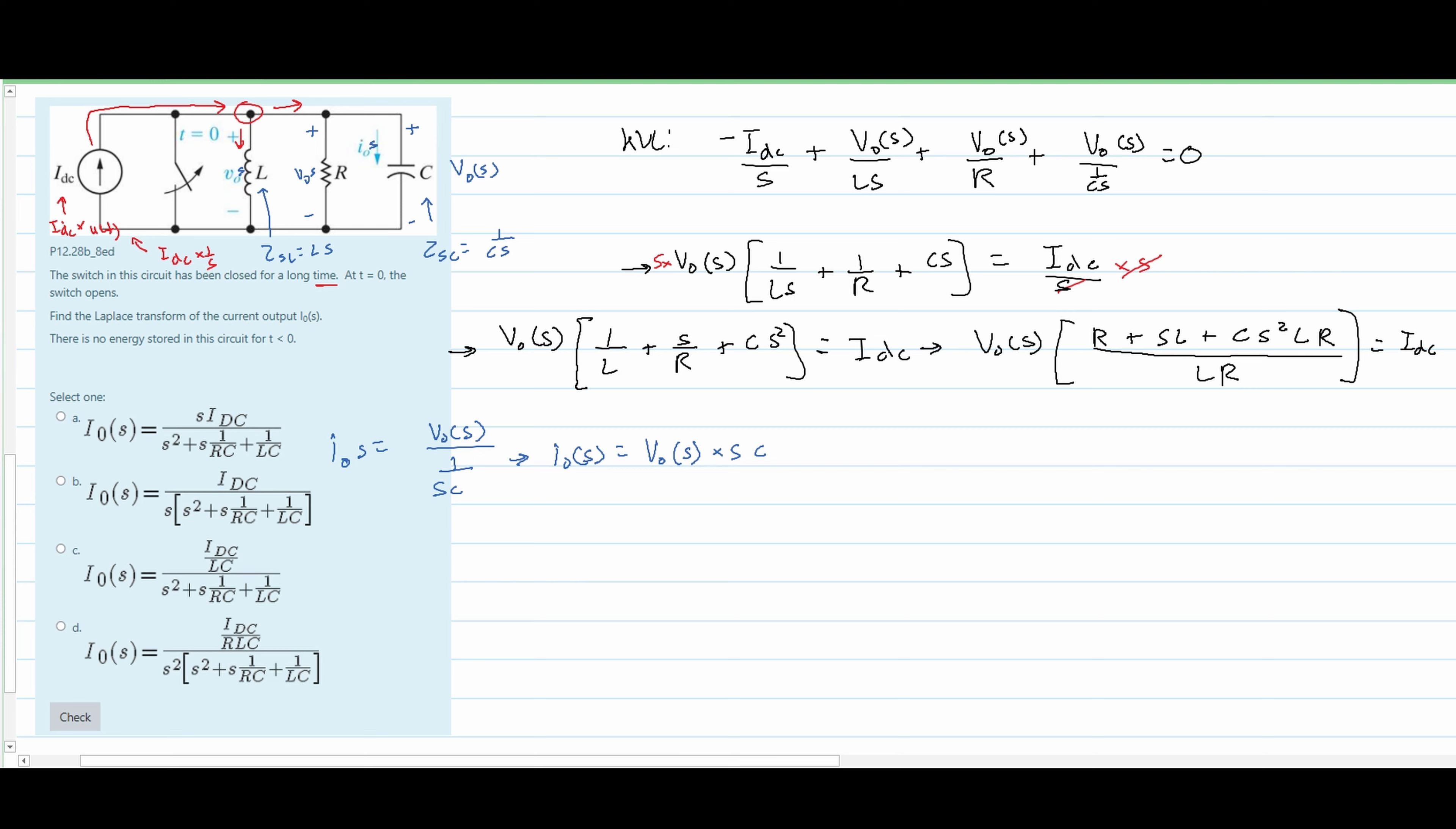Now we want to plug in our V0. To plug in our V0, we need to rearrange this a little bit. We're going to take the inverse of this and multiply it on both sides, that way we get V0(s) by itself. So we can then plug it in. We're going to have IDC times LR divided by R plus sL plus c s squared LR.